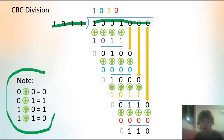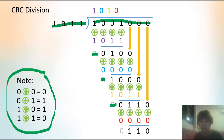And here is the note for how the exclusive OR works. So we can see in the first part of the division, the leftmost bit of the result is zero, and so are the other three. So we know that we don't need the first exclusive OR, so we will just ignore it.